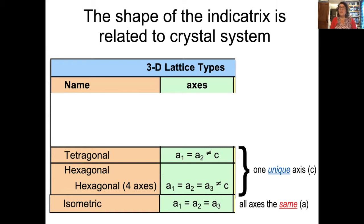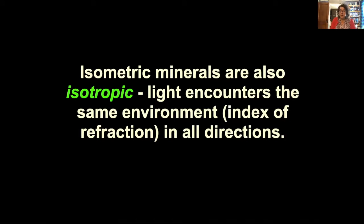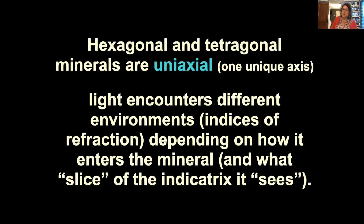The optical indicatrix is related to that relationship. Isometric minerals are also what we call isotropic when talking about how light behaves. Light encounters the same environment — the same index of refraction — no matter how it enters the mineral, in all directions.